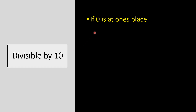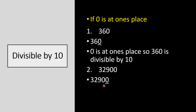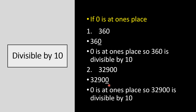Divisibility rule for 10: if 0 is at the ones place, the number is divisible by 10. For example, 360 — 0 is at the ones place, so 360 is divisible by 10. Another example: 32,900 — 0 is also at the ones place, so 32,900 is divisible by 10.